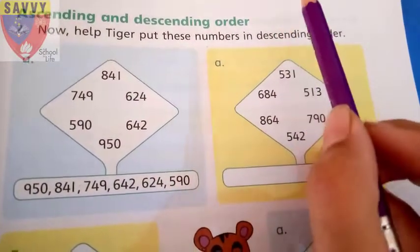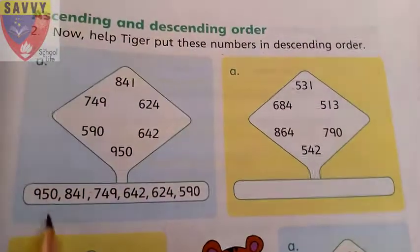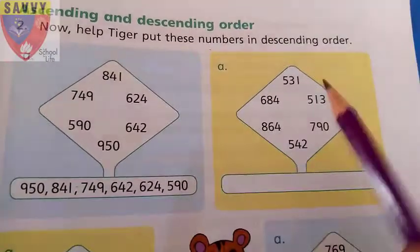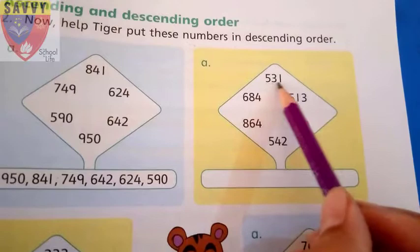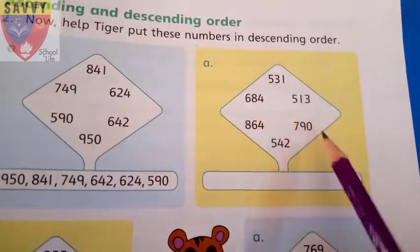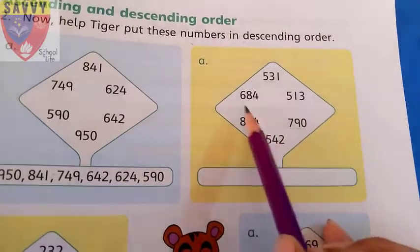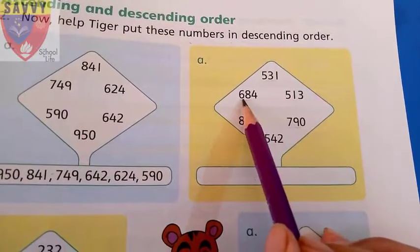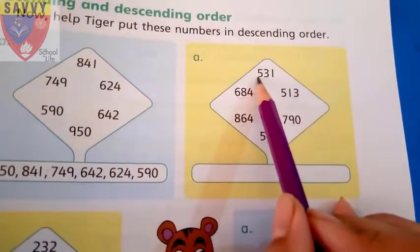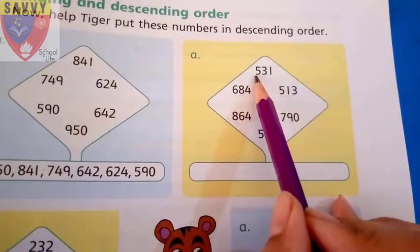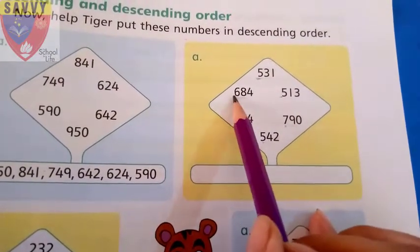Descending order means from up to down, from greatest to smallest — bare se chote ki taraf. Our numbers are 531, 513, 790, 542, 864, and 684. We check the hundreds values first: 500, 500, 700, 500, 800, and 600.